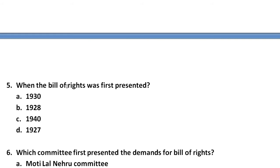Question number 5: When was the Bill of Rights first presented? Do you think it was 1930 or 1928? The options also include 1940 or 1927. The correct answer is clearly given in the book, so check your textbook for this.